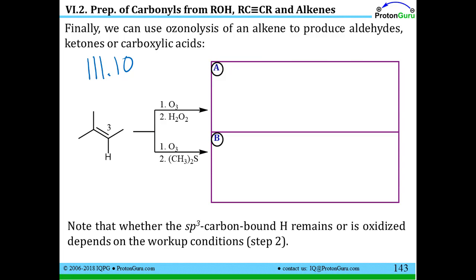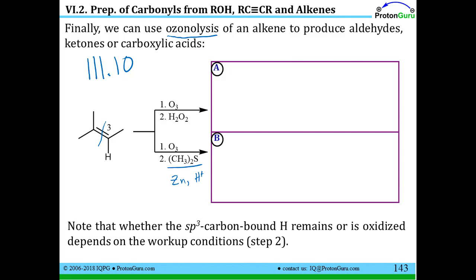We've seen ways to do oxidation of alcohols to get carbonyl compounds, and we can do reactions of alkynes to get carbonyls. In lesson 3.10, we talked about the ozonolysis reaction. The ozonolysis reaction is a way to make aldehydes, ketones, or carboxylic acids from alkenes. When you have reducing workup conditions — often zinc with HCl, some acid — you simply cut the alkene in half. Here's one half of the alkene, the other half of the alkene. There's a pretty complicated mechanism shown in 3.10, but you get these carbonyls — in this case, a ketone and an aldehyde.